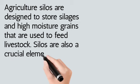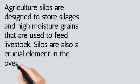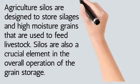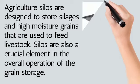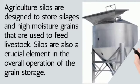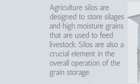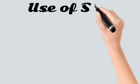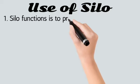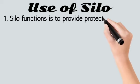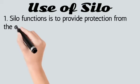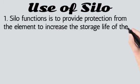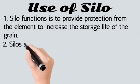Agriculture silos are designed to store silages and high-moisture grains that are used to feed livestock. Silos are also a critical element in the overall operation of grain storage.